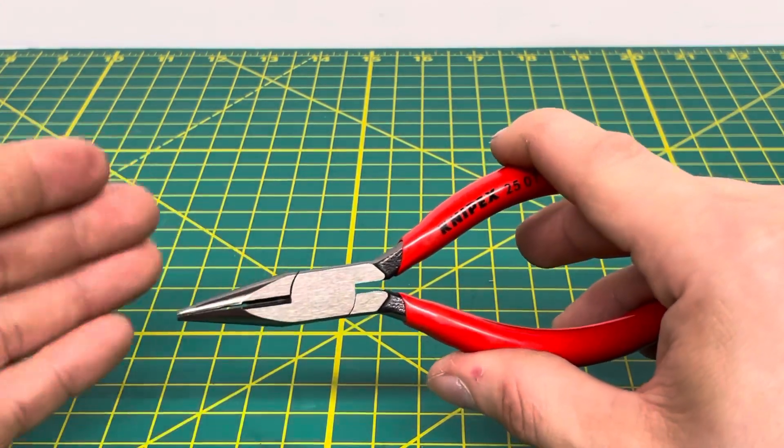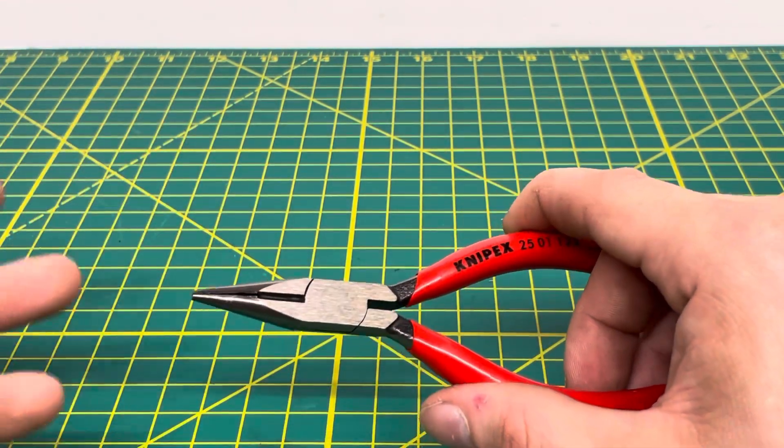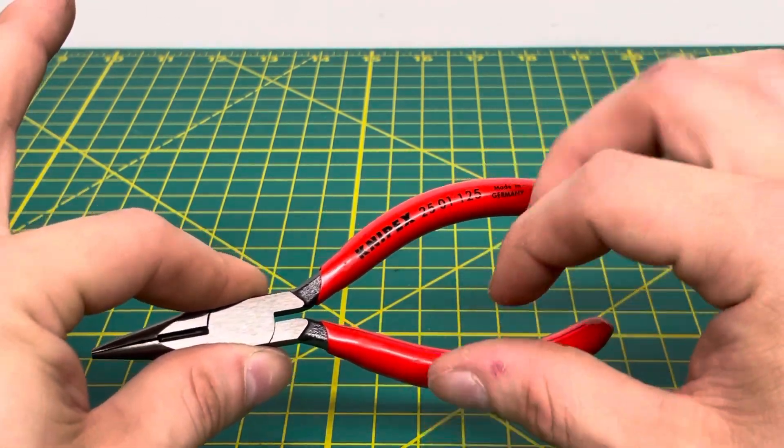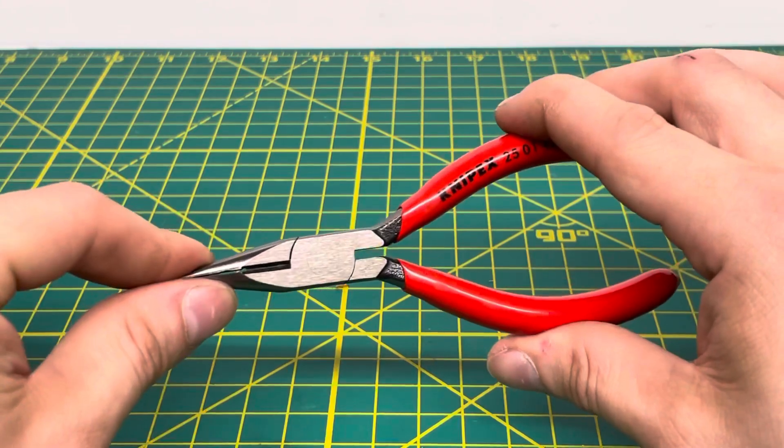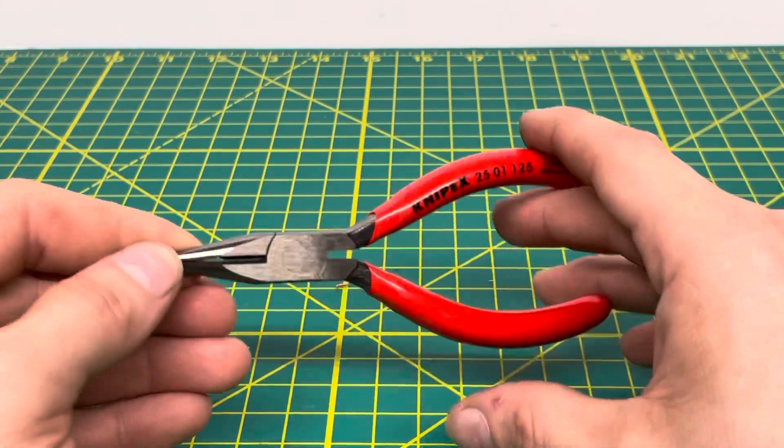I think the smallest that I've seen and the smallest that I currently have is a Klein, like a six or seven inch. I just really like this little five and a half inch pair of needle nose pliers that Knipex has to offer.